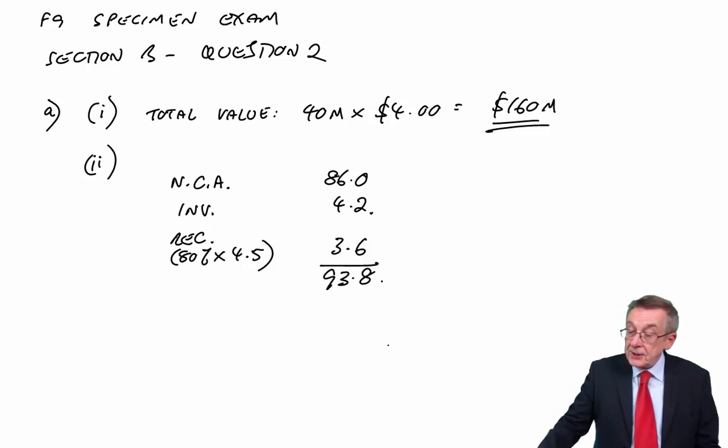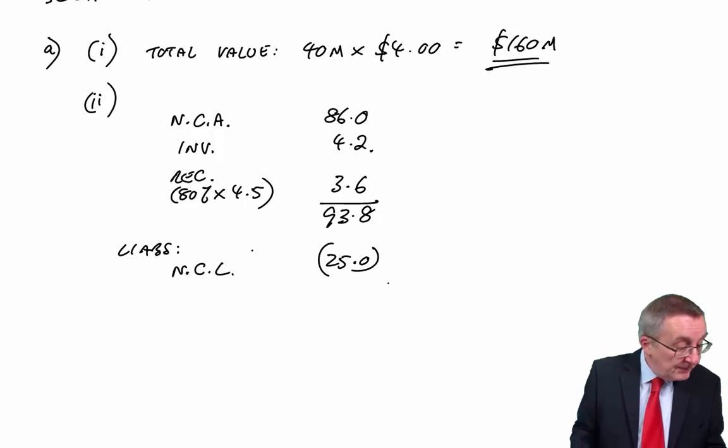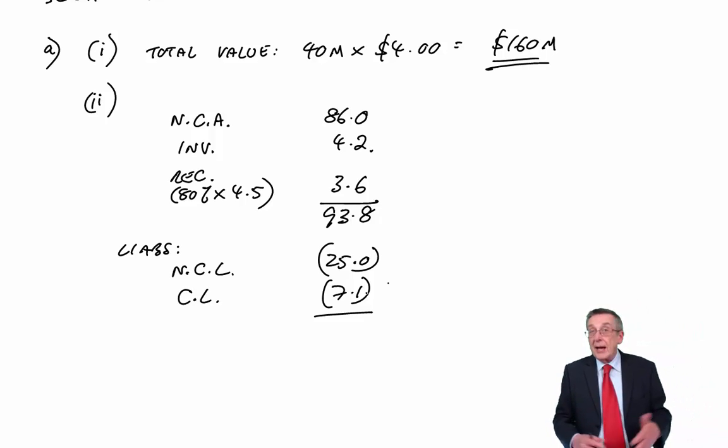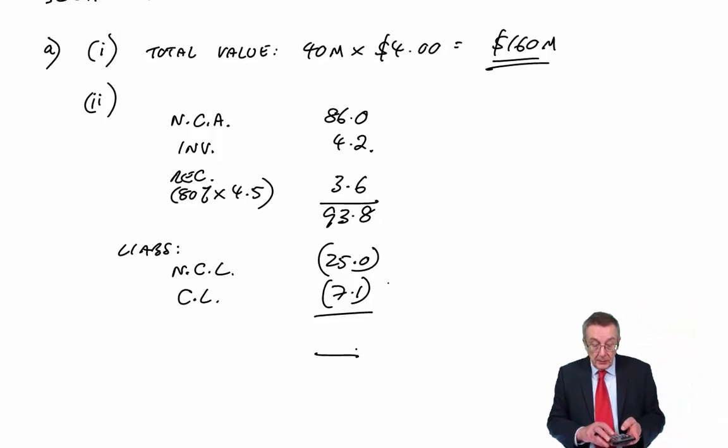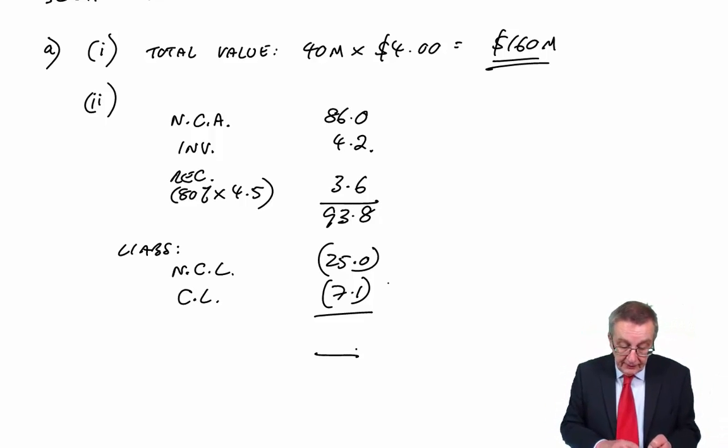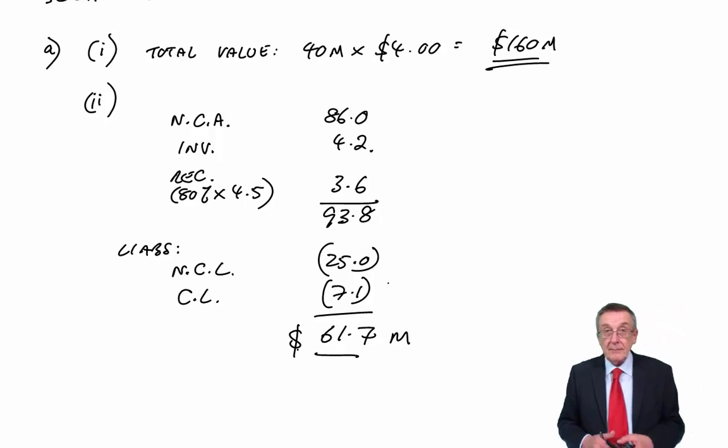Net assets, we need to subtract the value of the liabilities. Well, with non-current liabilities of 25, there's no mention anywhere of the actual liability ending up any different. So what is the net value? 93.8 minus 25 minus 7.1. 61.7.